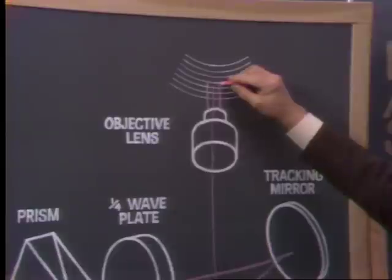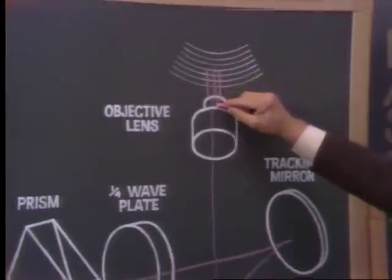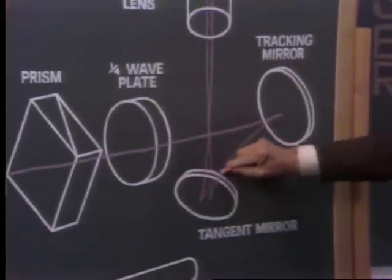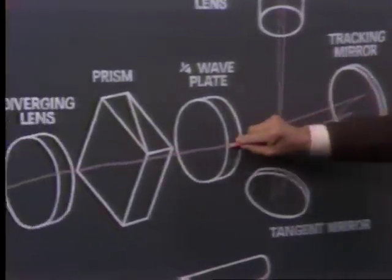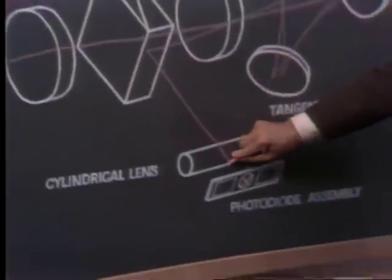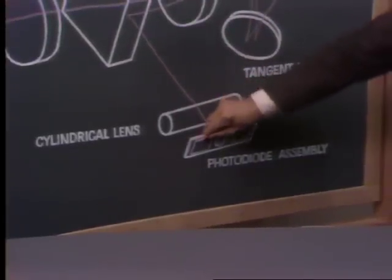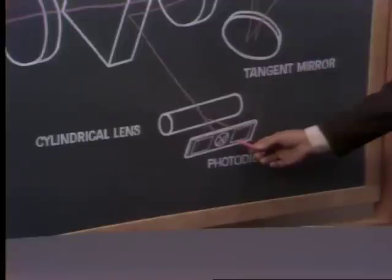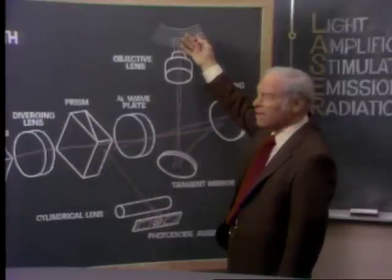Then microscopic pits on the surface interrupt the beam and reflect some of it back through the mirrors. When the reflected beam reaches the prism, it's deflected onto a device that converts the optical beam into a frequency-modulated signal that contains both the sound and picture information — the same information that was encoded on the disk when it was made.